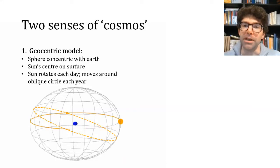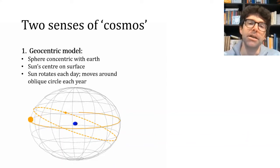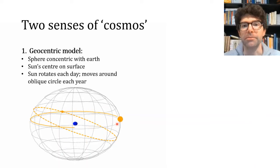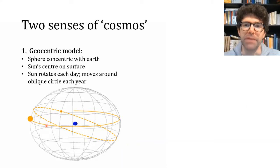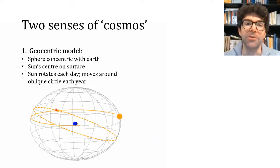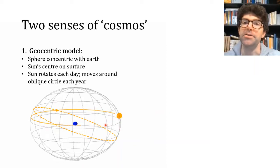Archimedes considers two meanings of the word cosmos - the thing we're eventually going to imagine filling with sand. The more minimalist one focuses on the sun and assumes a static earth with the sun orbiting on the surface of a sphere concentric to the earth. Archimedes says this was a familiar idea in Greek astronomy: with this geocentric perspective, over the course of a year the sun appears to do a circuit of an oblique circle embedded in a sphere doing a daily spin around the earth's polar axis.